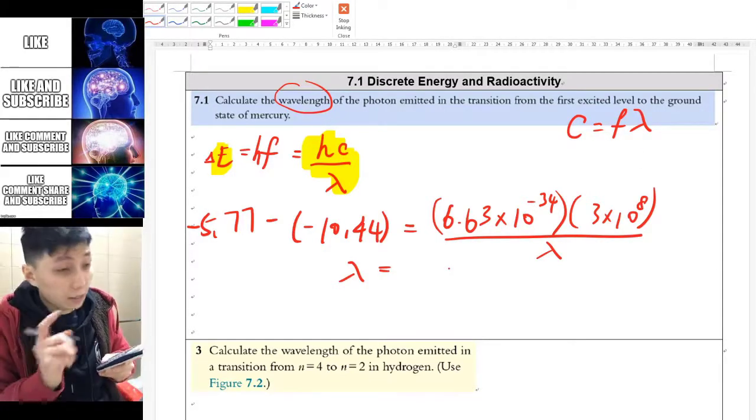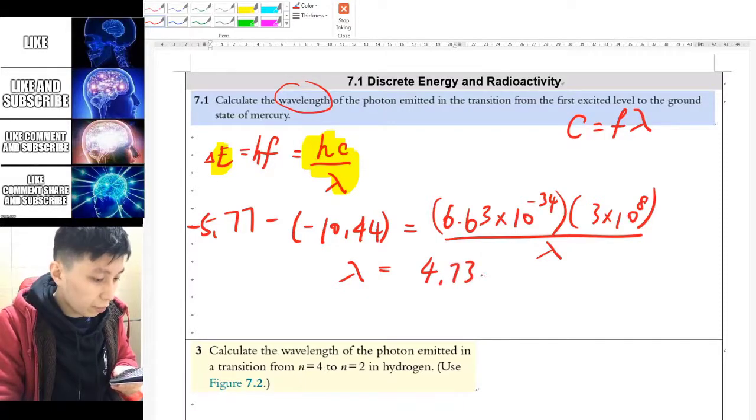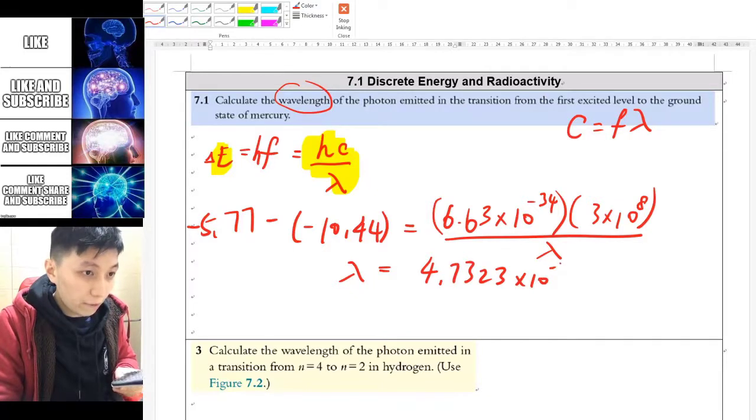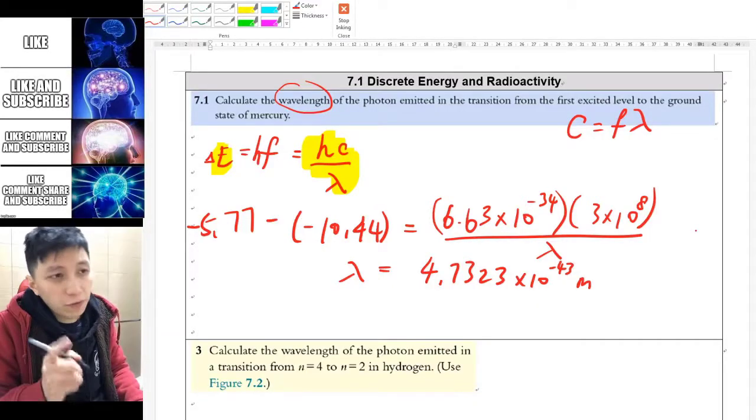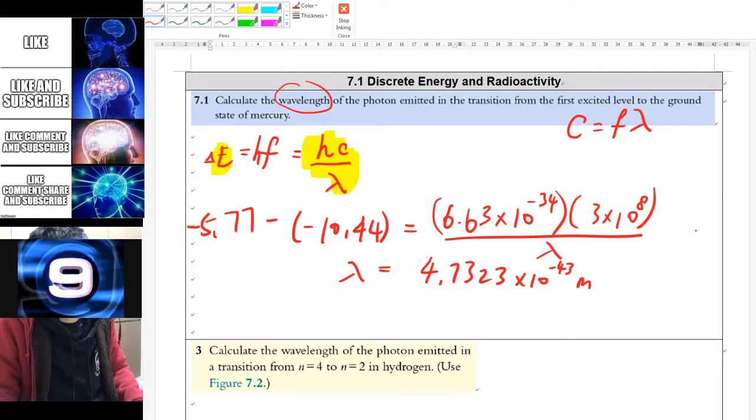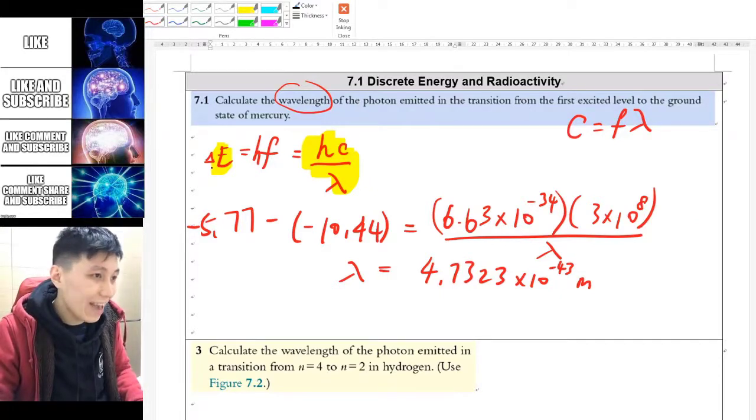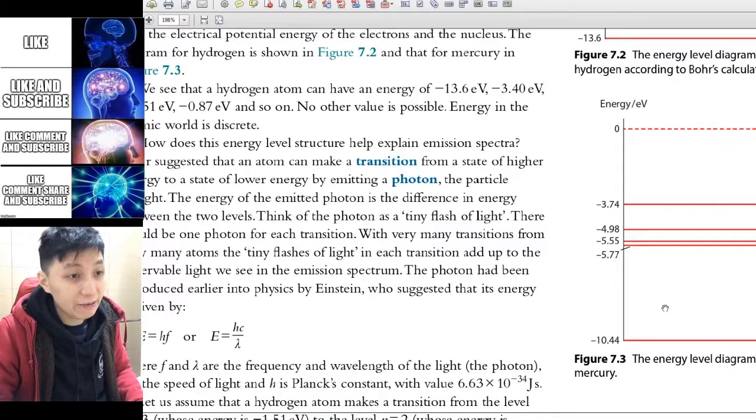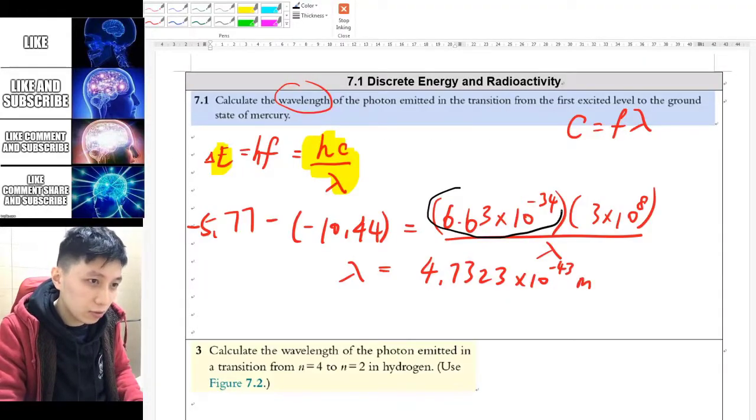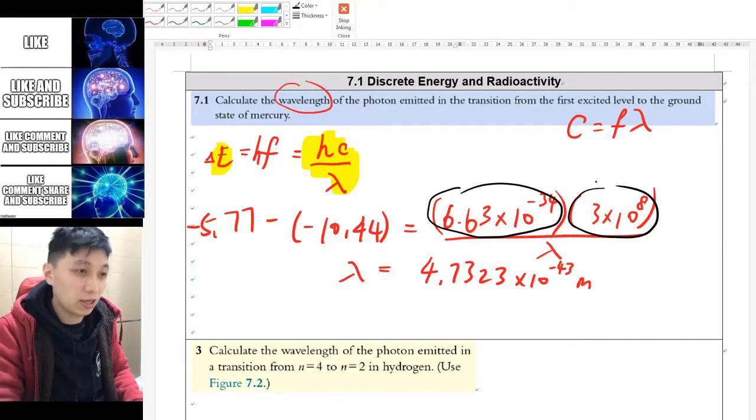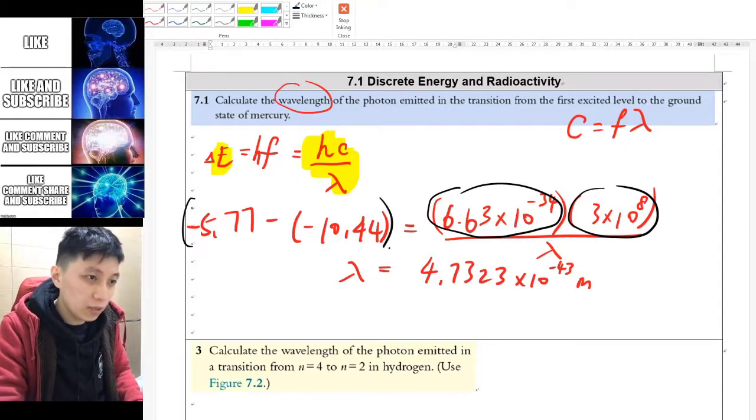If you really try to press the calculator using this equation, what you get will be 4.7323 times 10 to the power of negative 43 meter, which is wrong. Do you know why it is wrong? I'll give you 10 seconds to think about it. The reason why it is wrong is because the energy delta E that you find is in a unit of eV. If you look at the diagram again, the y axis here is in a form of eV unit. So when you try to apply to this equation because H and C are all SI units, eV is not SI unit. And therefore, what you have to do is to convert the energy, this in eV, into joule.